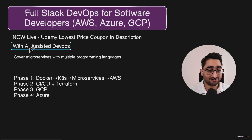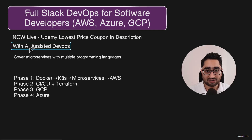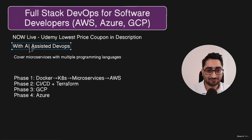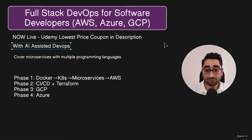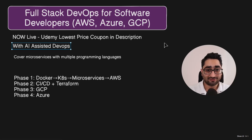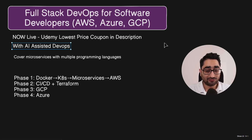This course also covers AI. I cover how you can make use of AI to improve your DevOps lifecycle. AI is not optional these days — the kind of progress AI has made in the past few years has been phenomenal and it is disrupting every sector. So it's important that you learn how to integrate AI into your DevOps workflow, and I've made sure to include that in this course.